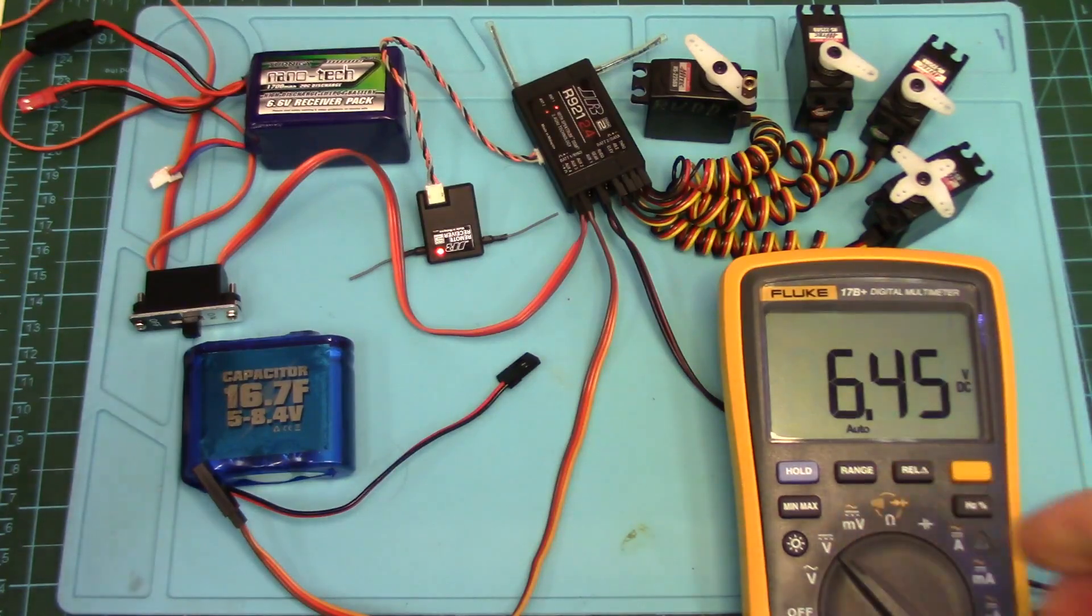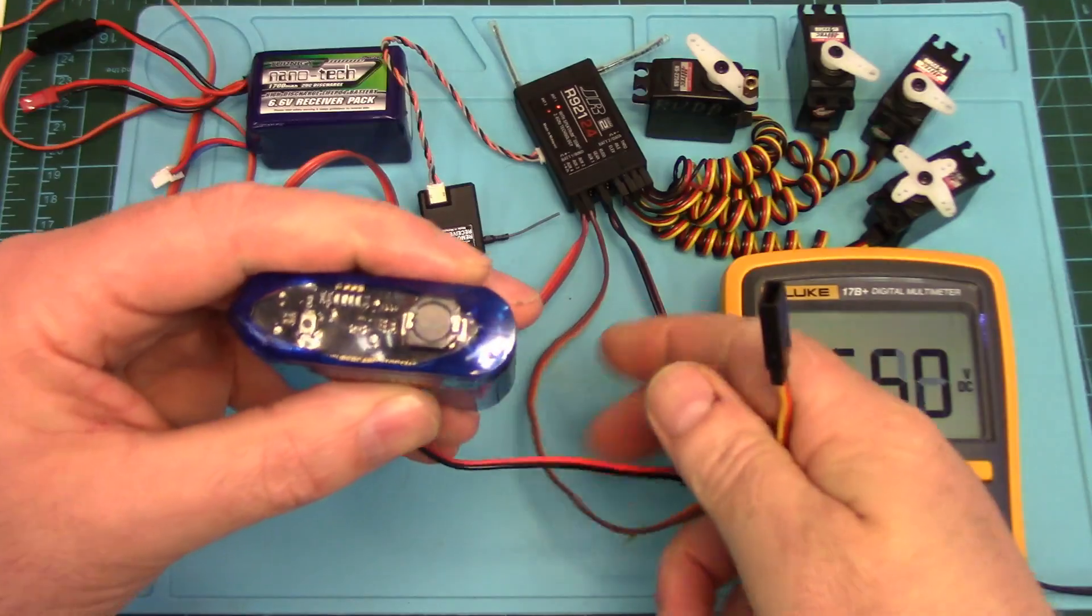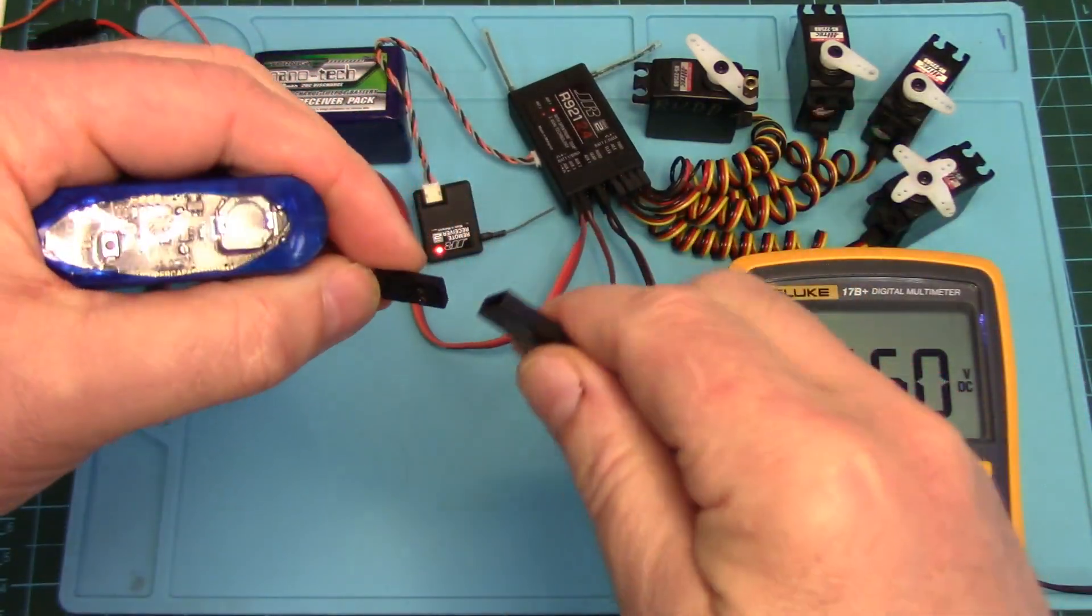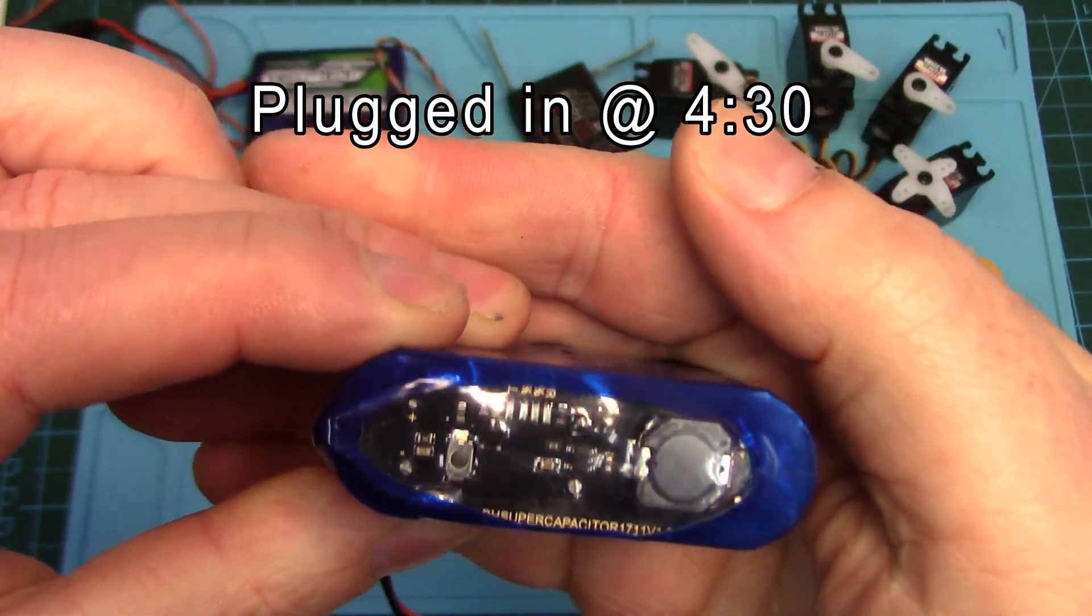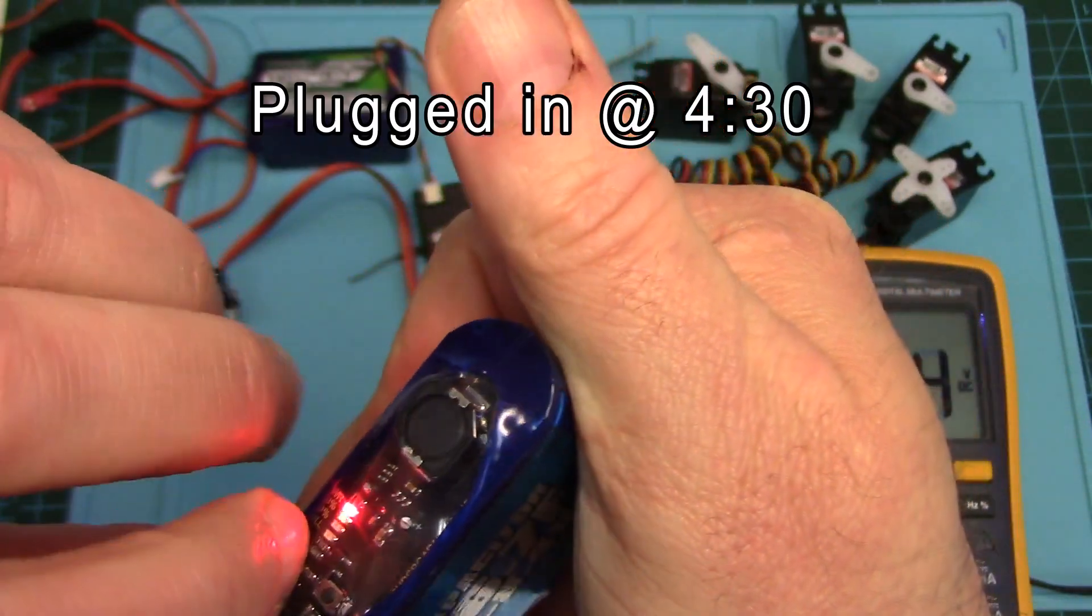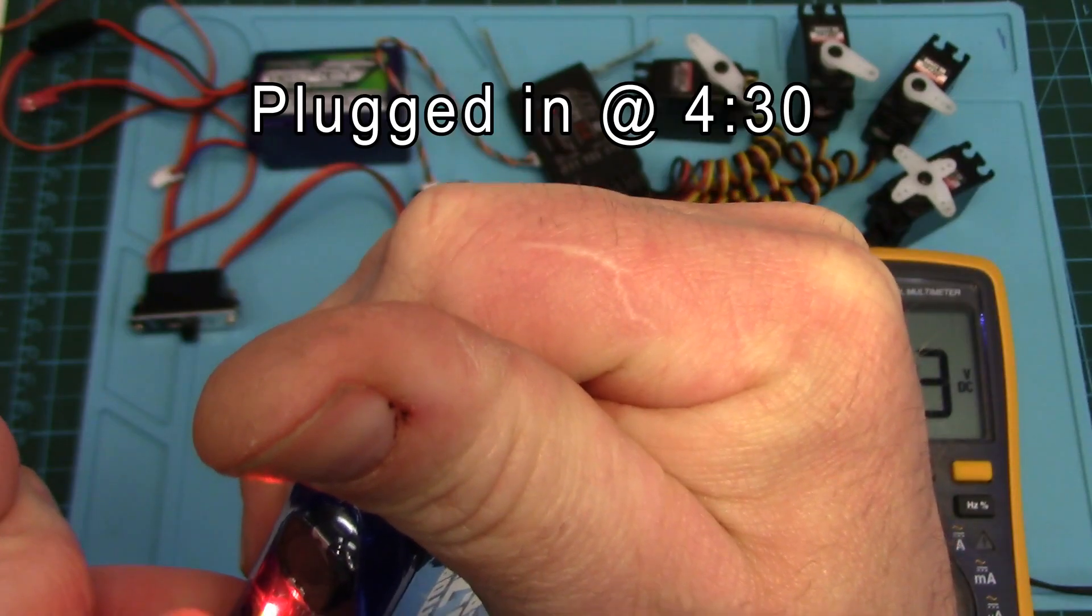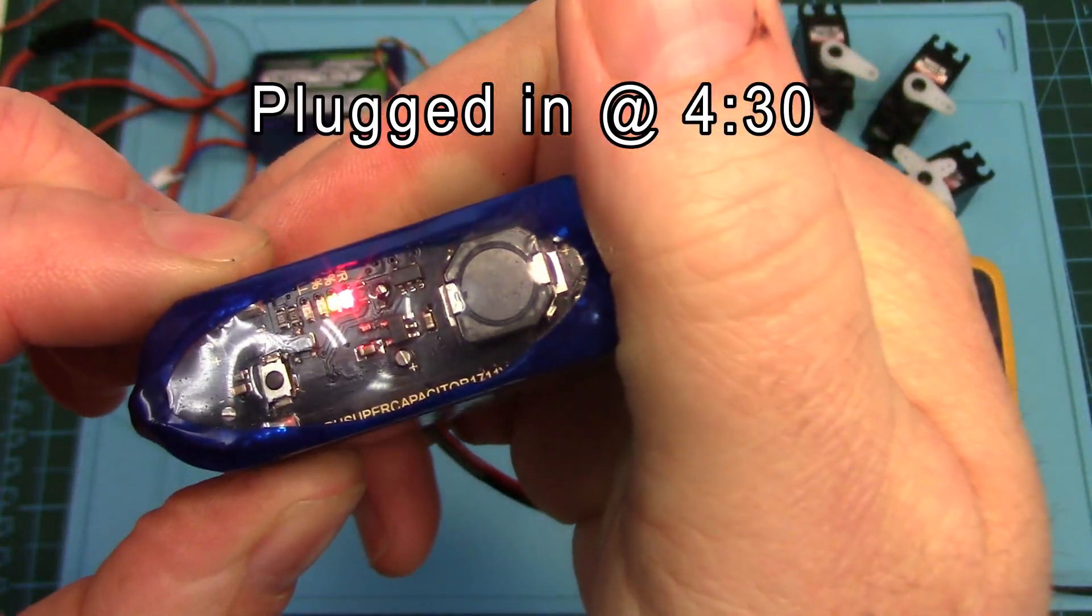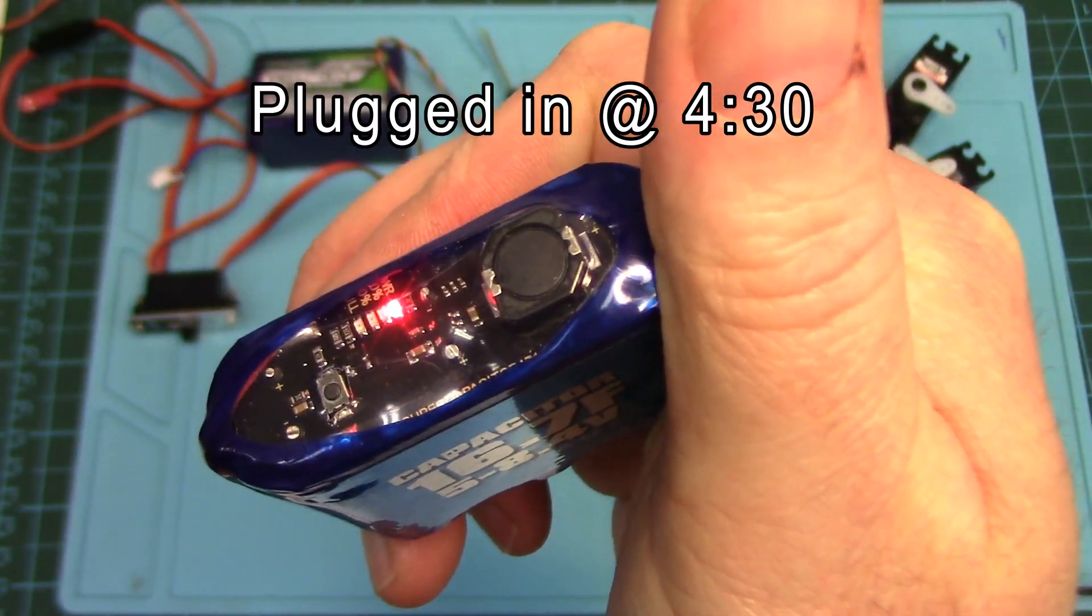So we will now plug this cap pack in. Let's see what happens when we power this up. Okay, so a little red LED starts flashing, and that's indicating it's getting power. And then it's hard to see, but there's 20%, 60%, and full. So as this thing is charging up, these little green LEDs will in sequence light up, I presume.